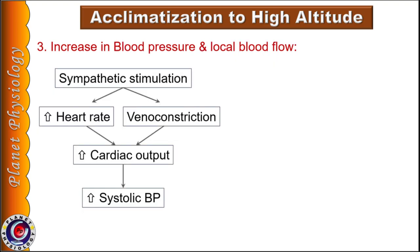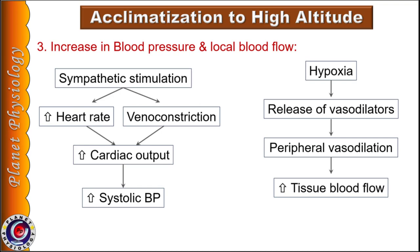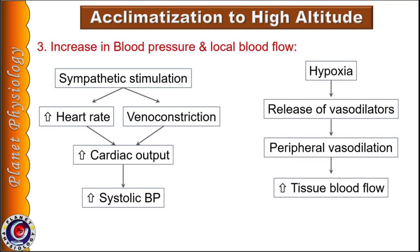As a person ascends to high altitude, blood pressure increases due to sympathetic stimulation leading to increase in heart rate and vasoconstriction. Venoconstriction leads to increase in venous return, and cardiac output increases up to 30% above normal. This is an immediate response, and over the period of weeks as hematocrit rises, cardiac output slowly decreases to normal. Increase in blood pressure improves perfusion pressure and tissue blood flow. In response to hypoxia, tissues release vasodilator substances locally, leading to local vasodilation and increase in tissue blood flow, helping tissues obtain enough oxygen.